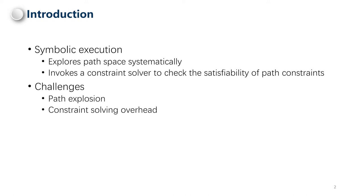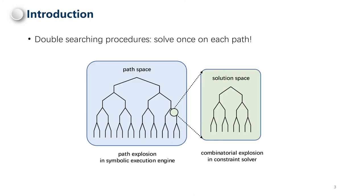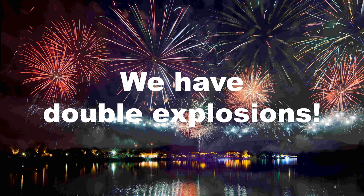Symbolic execution explores path space systematically and invokes constraint solvers to check satisfiability of path constraints. In practice, symbolic execution faces two challenges: path explosion and constraint solving overhead. Basically, there exist double searching procedures in symbolic execution. The symbolic execution engine uses some strategy to search path space. On each path, the constraint solver searches the solution space to find the solution or return unsat.